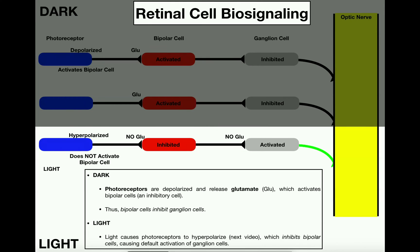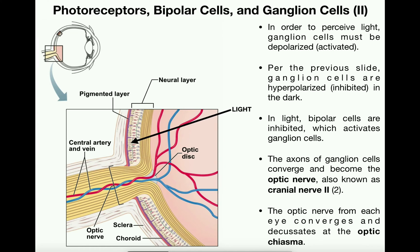We talked about how in the light we have a sequential order of activating or inhibiting different cells. In the light, we have photoreceptor cells being hyperpolarized, which causes inhibition of the bipolar cells, and the inhibition of these cells produces default activation of ganglion cells. Remember that ganglion cells have axons continuous with the optic nerve. In this video, we're going to conclude by talking about how those signals from the ganglion cells ultimately travel down the optic nerve and throughout the brain.